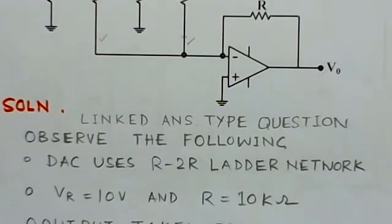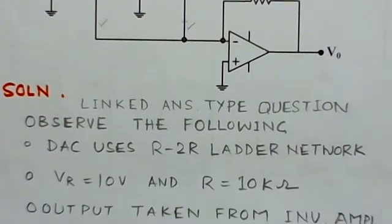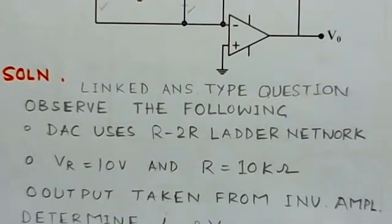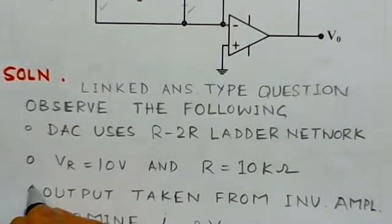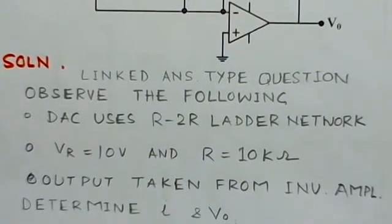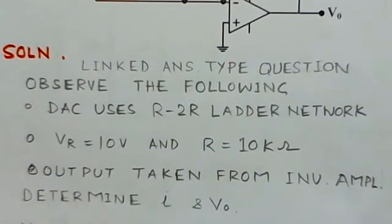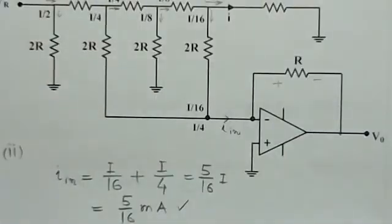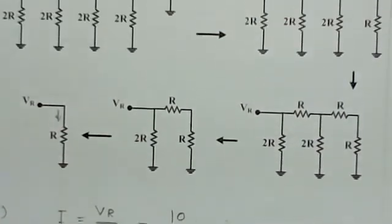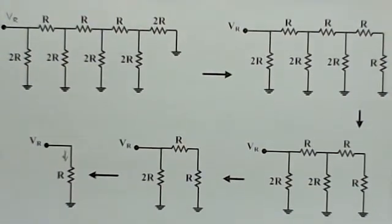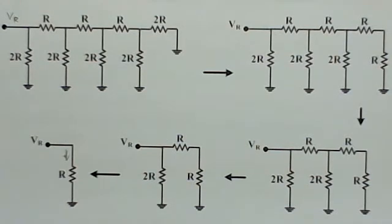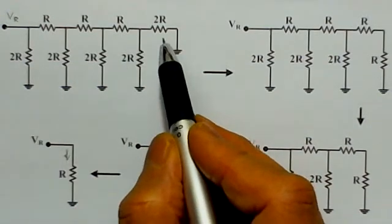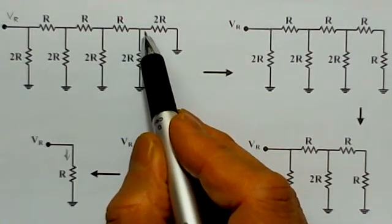We can note some key observations: the DAC is using an R-2R ladder network, Vr is 10 volts, resistance is in kilo ohms, and output is taken from the inverting amplifier. The resistive network connected at the input of the operational amplifier can now be simplified, since the points going to the inverting terminal are at ground.